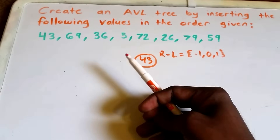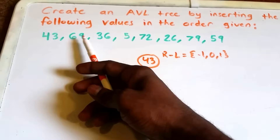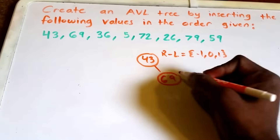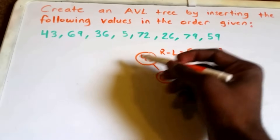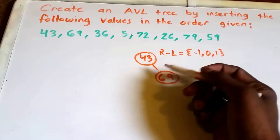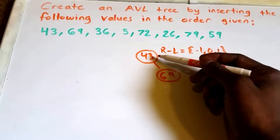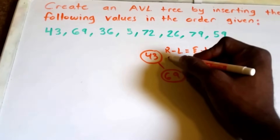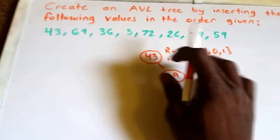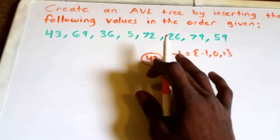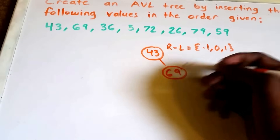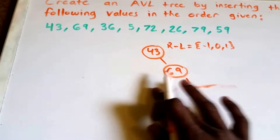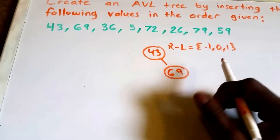AVL trees are just self-balancing binary search trees. Next we're going to insert the value 69. Since 69 is greater than 43, we insert it to the right. We didn't check the balance factor for 43 before because there were no subtrees, so it was 0 minus 0. Now the balance factor for 43 is 1 minus 0, which equals 1 — still balanced. For 69, with no child nodes, we get 0 minus 0, so the balance factor is 0.